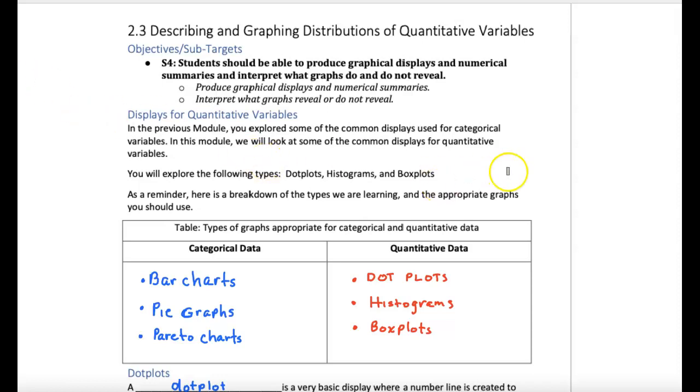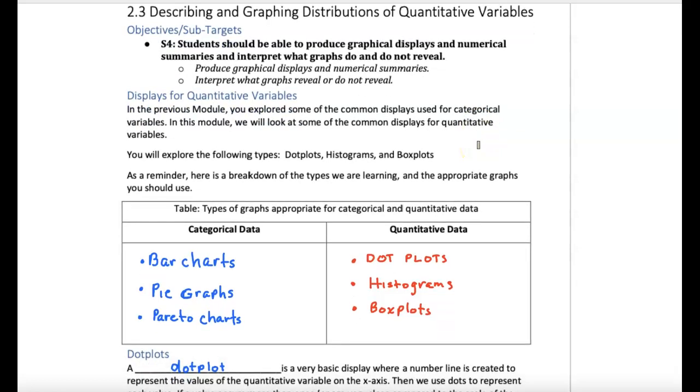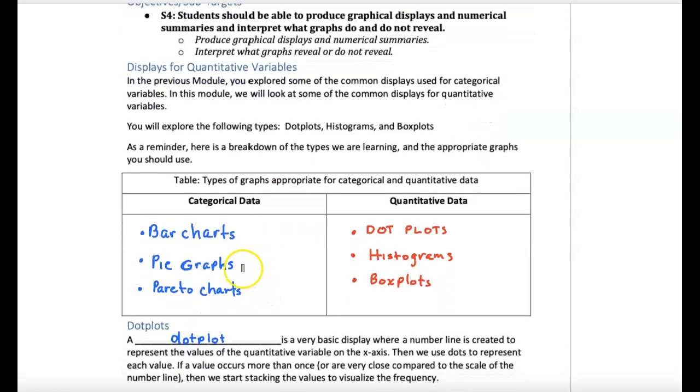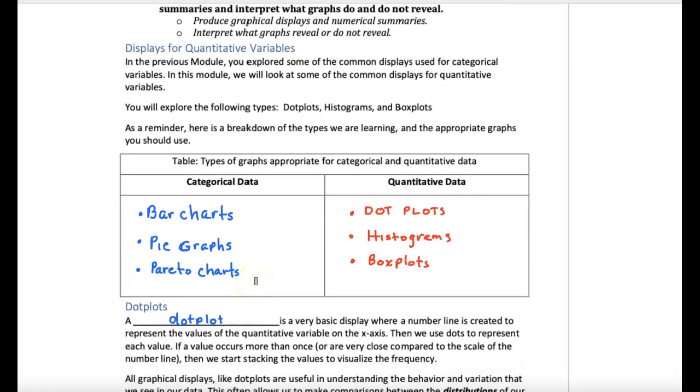We've taken a look at how to describe categorical data using graphs - bar graphs, bar charts, pie graphs, Pareto charts, to name a few.